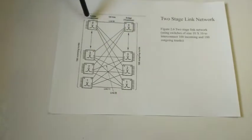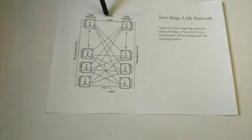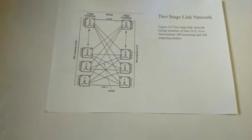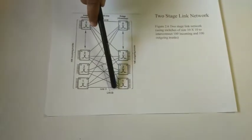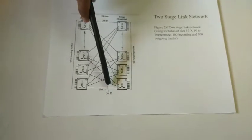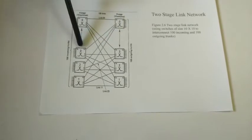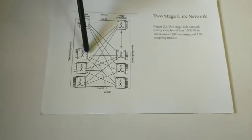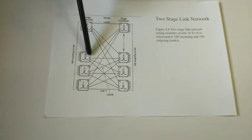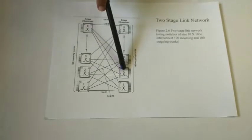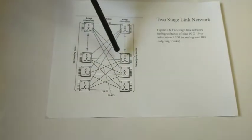So for a 2-stage network, we need 10 cross 10 switches and we need 100 links for the connection. The link number is represented on the diagram itself. For example, link 23 connects the outlet of the 3rd primary switch to switch 2 on the secondary side, where 3 is the inlet of switch 3. In this way you can explain any link number.